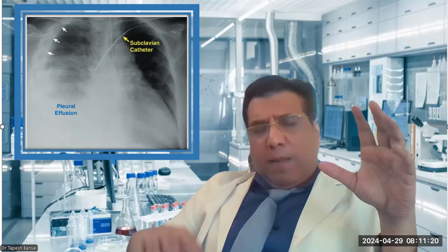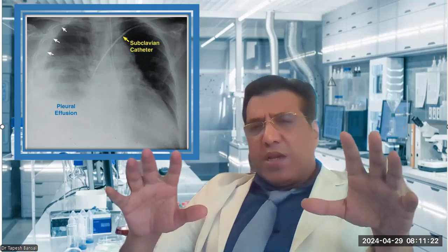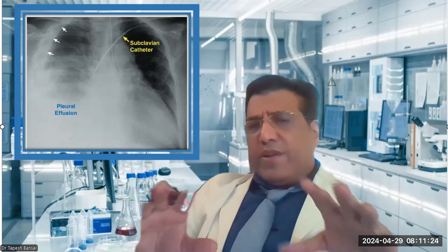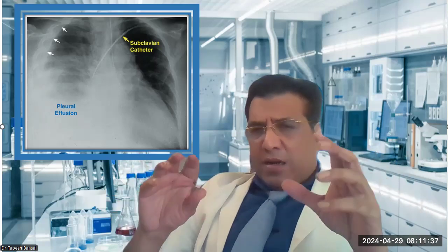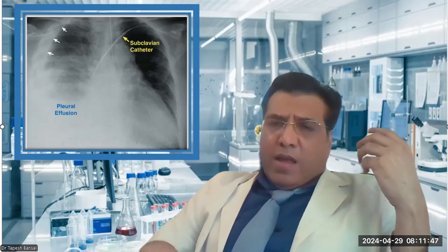The other thing is there are numerous complications with central line. These are very rare. For example, air embolism. Then stroke can also occur if there is an arterial puncture. You can even get a stroke. You can even get brachial plexus injury. Multiple complications can occur. And these are more common if you are careless or when you are starting your central line insertion, even when you are early in the career.